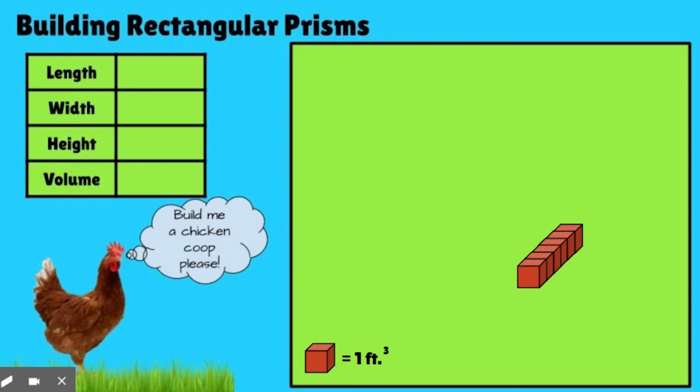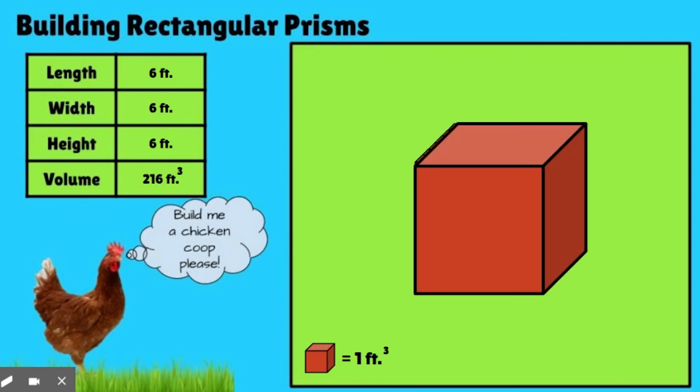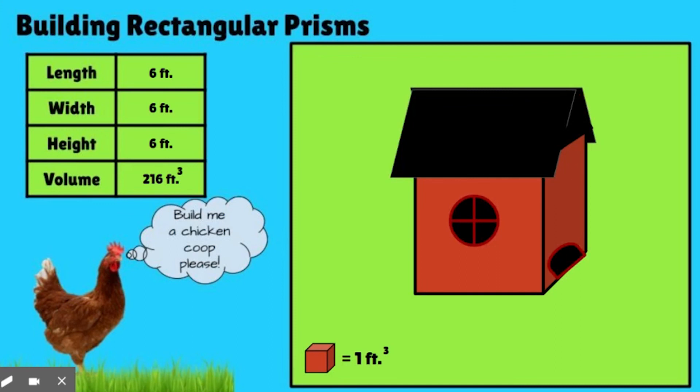All right, well, if you figured this out, you know that the length is going to be six feet. The width is also six feet. And the height is also going to be six feet because it's a cube. All of them are going to be the same. So six times six is 36. 36 times six is 216. So the cube here would have 216 cubic feet. Let's put some walls on that bad boy. You could use a roof and a window and a little door. And all we need left is our chickies.